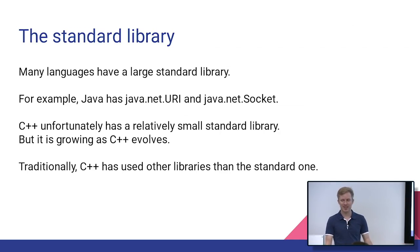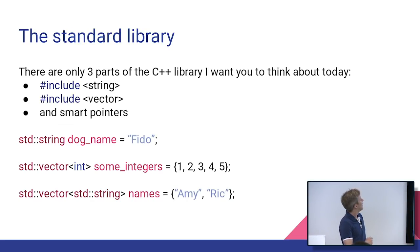So traditionally, the solution to this is we use separate libraries, something else. If we need a socket, we go find a socket library. The standard library is huge, despite me just saying how tiny it is. It's tiny compared to Java, which is astronomical. But despite it being huge, I only want to focus on three things for now, because I don't have a ton of time. So I want to talk about string, vector, and smart pointers.